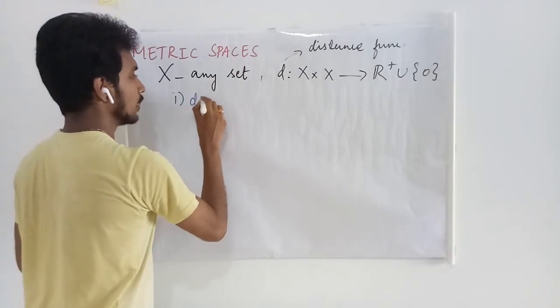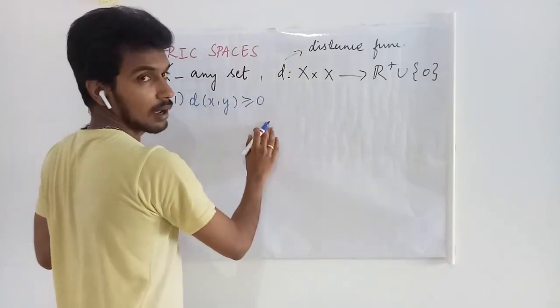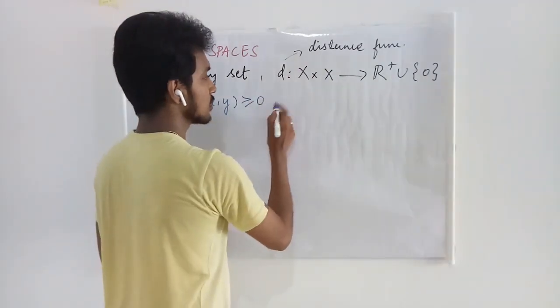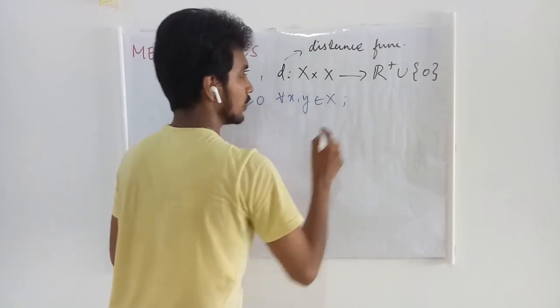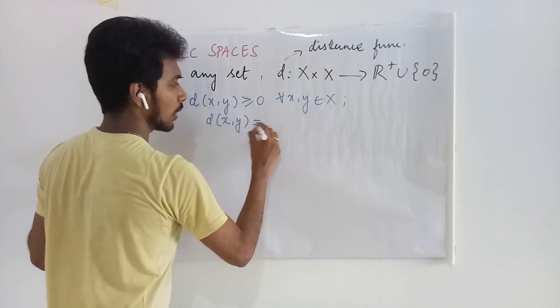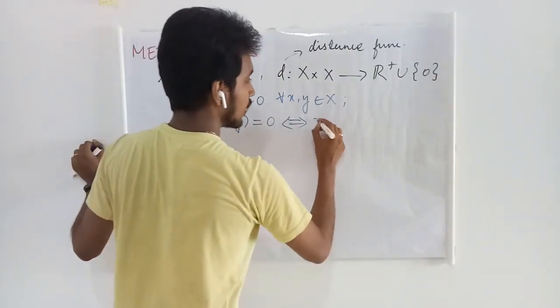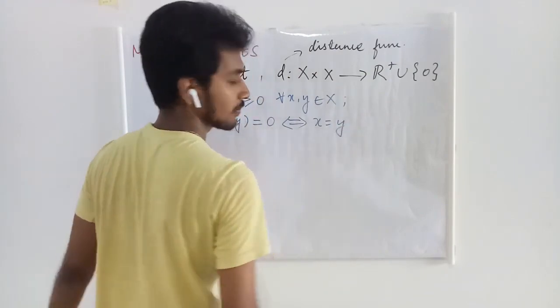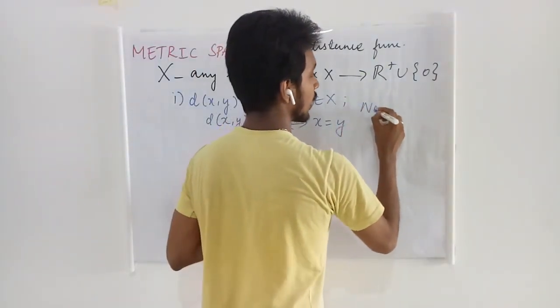The first condition is D of x comma y is non-negative for all x, y in X, and D of x comma y equals zero if and only if x and y are the same. This condition is known as non-negativity.